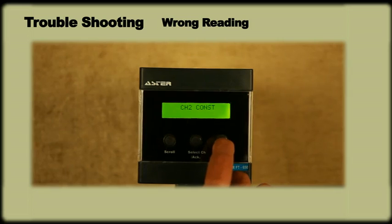If there is a second sensor connected to the meter, the display will show ch2 constant. On pressing menu key again, it will show a previously set value. Similarly, we can set the required value using scroll and select ch keys. Press menu key twice to save and exit.